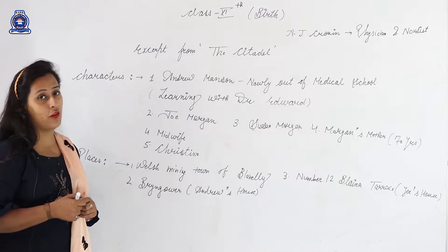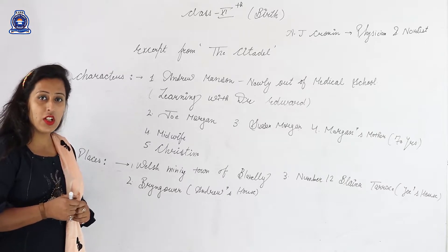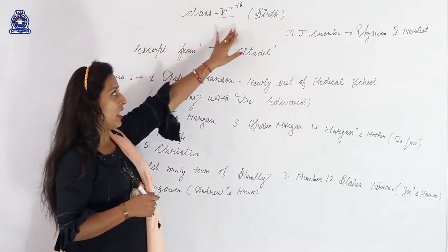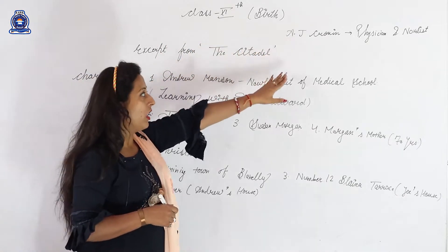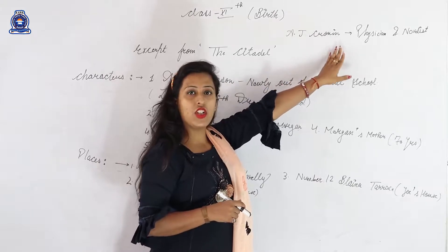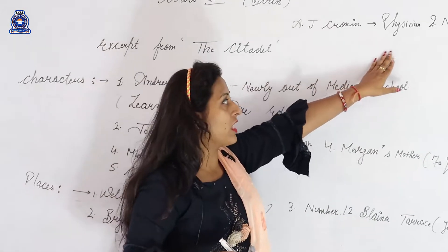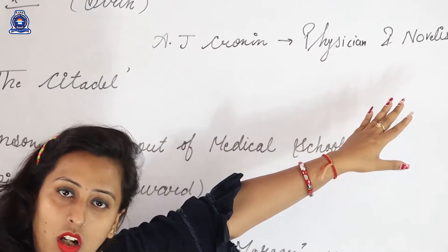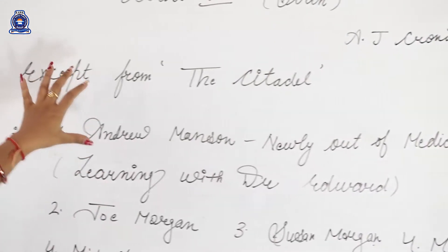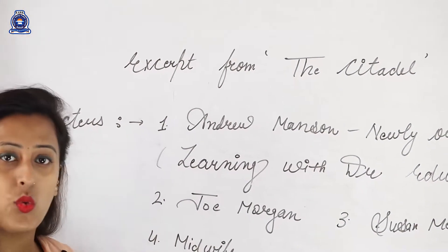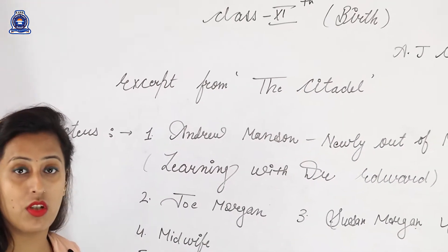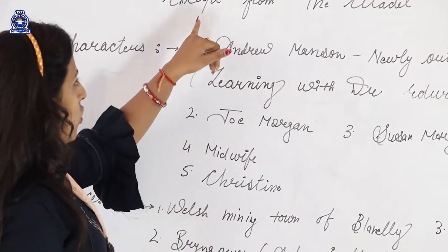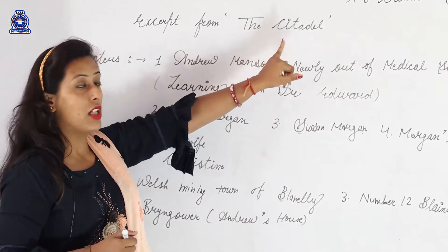Good morning, 11th class students. Today we are going to revise the summary of chapter 'Birth'. For class 11, the name of the chapter is 'Birth' and your writer is AJ Cronin. AJ Cronin was a physician and a novelist. This chapter is quite interesting — it tells about a baby's birth. This chapter is an excerpt from 'The Citadel'.